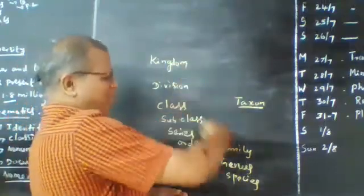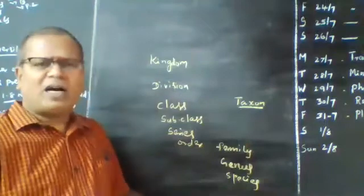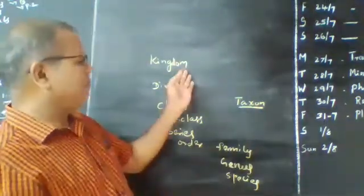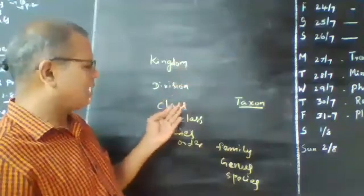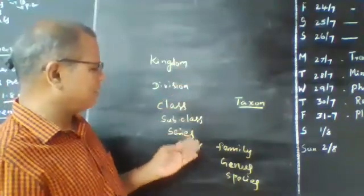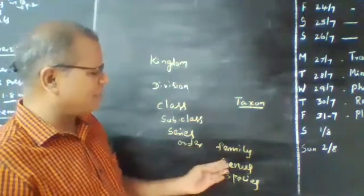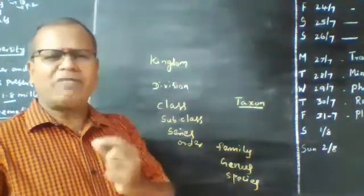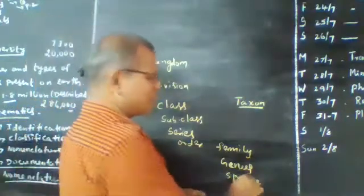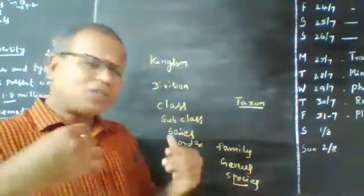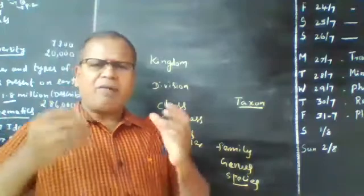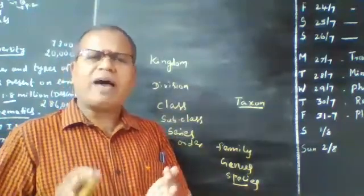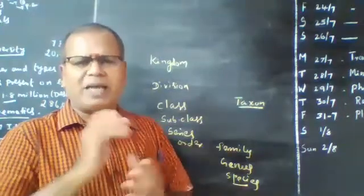This is the arrangement of plants in a hierarchy or sequence: Kingdom, Division, Class, Subclass, Series, Order, Family, Genus, and Species. The basic unit of classification is called species. Plants or animals that resemble one another in all characters — both vegetative and reproductive — are said to be a species.